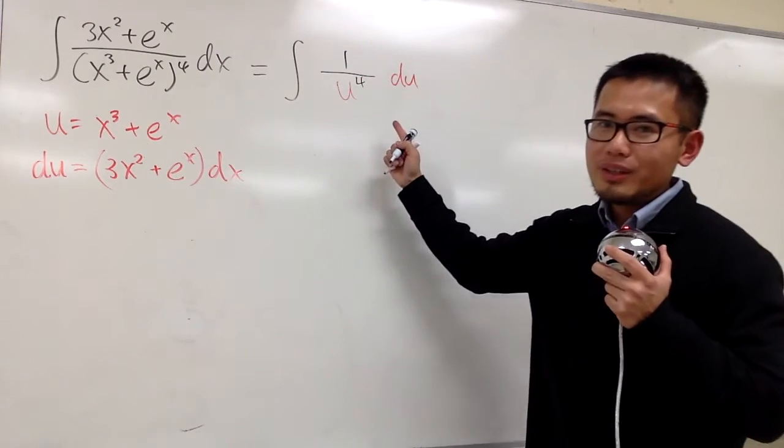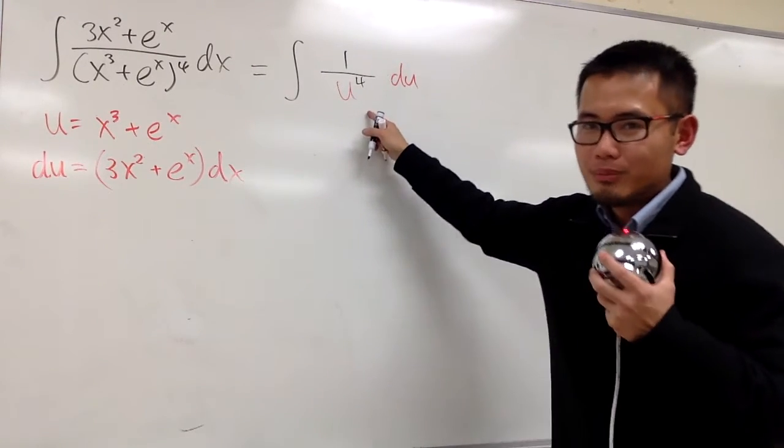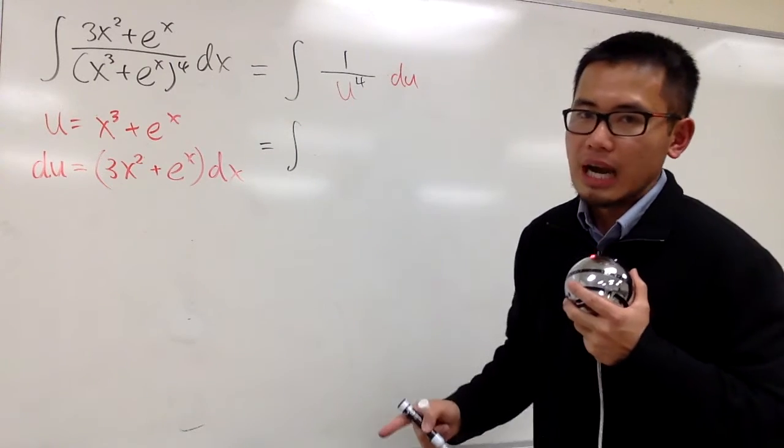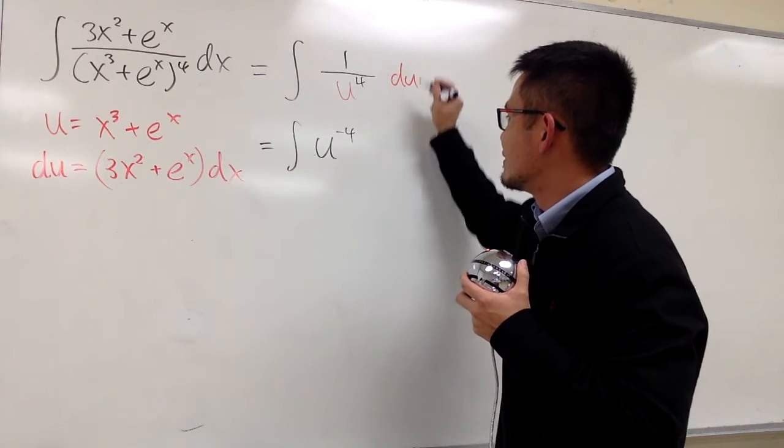And to integrate this, this is not going to be ln of something. This right here, we have to make sure we write it as the integral instead of u to the fourth power in the denominator. We have to look at that, u to the negative fourth power, right?